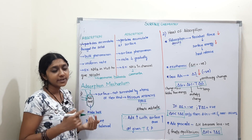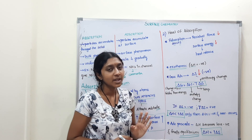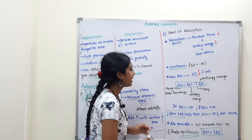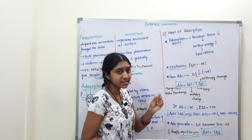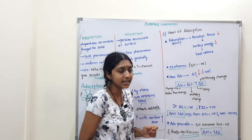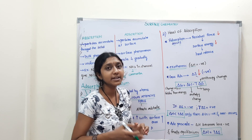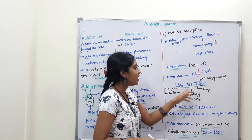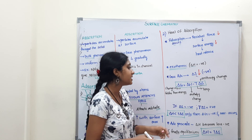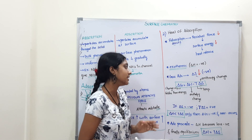During adsorption, the randomness of gas molecules decreases — that is, entropy decreases, so ΔS is negative. Now, consider the Gibbs free energy equation: ΔG = ΔH − TΔS, where ΔG is the change in Gibbs free energy, ΔH is the enthalpy change, T is temperature, and ΔS is the entropy change.